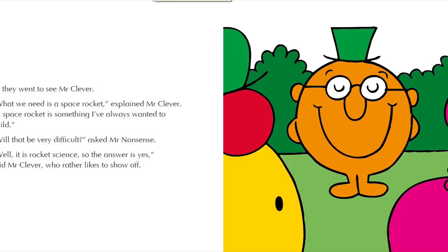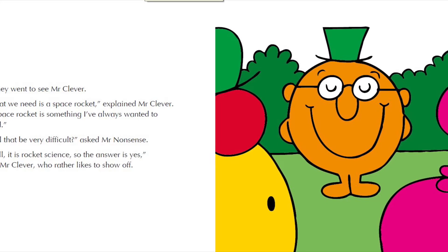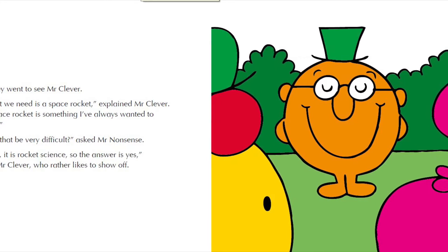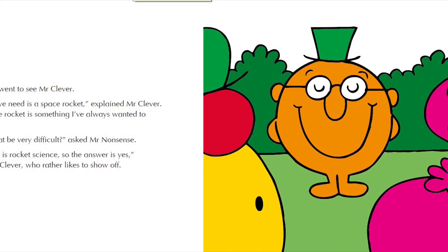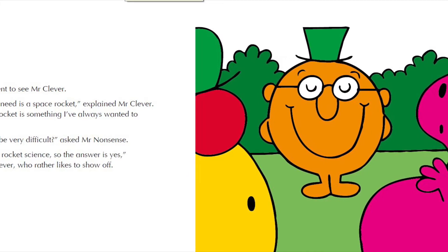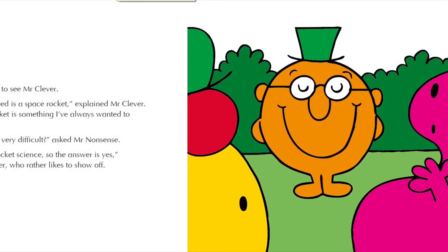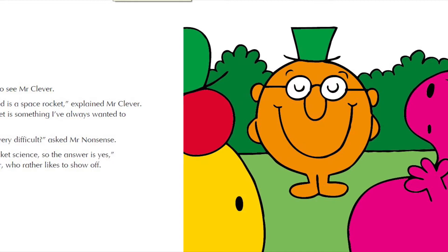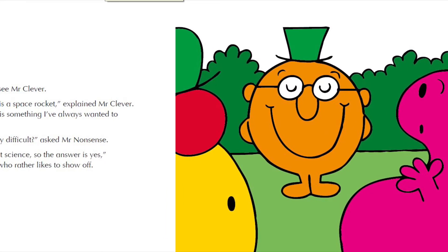So they went to see Mr. Clever. What we need is a space rocket, explained Mr. Clever. A space rocket is something I've always wanted to build. Will that be very difficult, asked Mr. Nonsense. Well, it is rocket science, so the answer is yes, said Mr. Clever, who rather likes to show off.